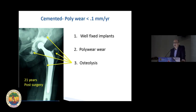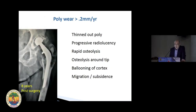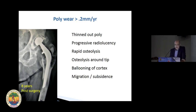Because you have a good cement mantle distally, the particles do not go to the tip of the stem. Unfortunately the answer here is not so simple — being a cemented cup, you need to do a full revision. Now what happens if your linear wear is more than 0.2 millimeters a year? You know that you have catastrophic osteolysis and rapid failure.